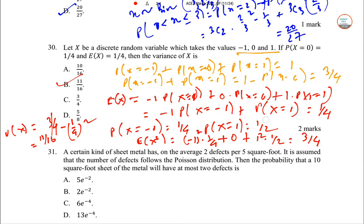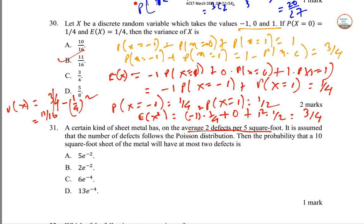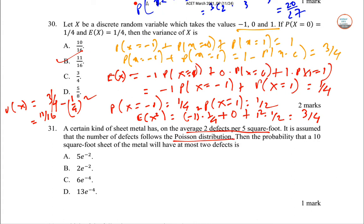Moving to problem 31. A certain kind of sheet metal has on average 2 defects per 5 square feet. It is assumed that the number of defects follows a Poisson distribution. Find the probability that a 10 square foot sheet of metal will have at most 2 defects.